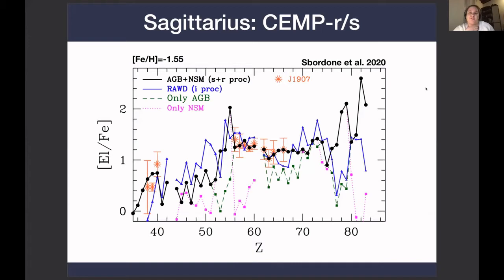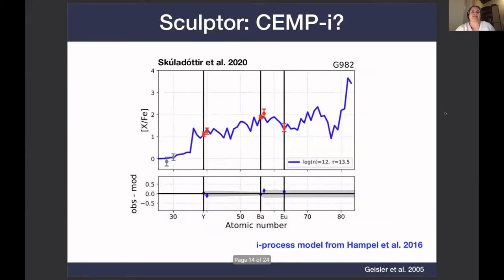The authors fitted the abundance patterns with various models, and they concluded that this was most likely a combination of the r and s process, as can be seen here, for example, in the dysprosium. That fits very nicely this black line, which is the AGB plus a neutron-capture contribution. There have been several other CEMP-s stars in dwarf galaxies with high europium over barium ratios, and sort of unambiguous origin.